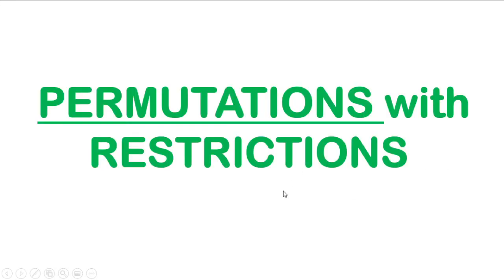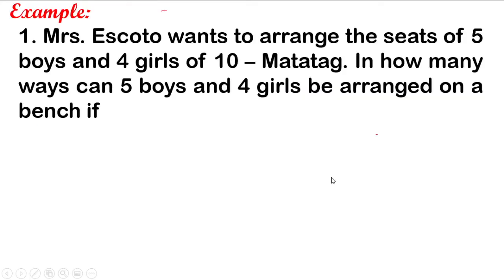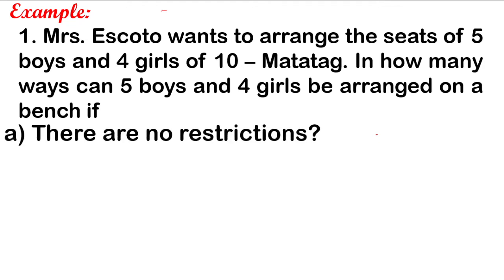Solving problems involving permutation — specifically problems about permutations that contain restrictions. In problem solving, when we say restriction, these are conditions which we have to consider first before arriving at the correct answer. Let's start with example number one. Mrs. Escoto wants to arrange the seats of 5 boys and 4 girls of 10 Matatag. In how many ways can 5 boys and 4 girls be arranged on a bench if, letter A, there are no restrictions?